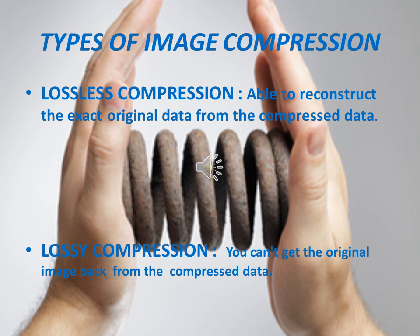There are two types of image compression: lossless compression and lossy compression. Lossless compression means that you are able to reconstruct the exact original data from the compressed data, and image quality is not reduced. Unlike lossless compression, lossy compression reduces image quality. You can't get the original image back after using lossy compression methods — you will lose some information.